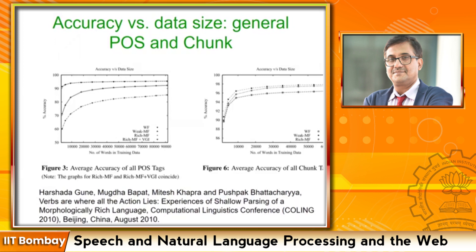You can also make use of the previous word and previous tag as a feature. How you use these features in the classifier will be discussed in upcoming lectures — both in sequence labeling and in classification, because you have to choose one amongst many POS tags, which is a classification problem.